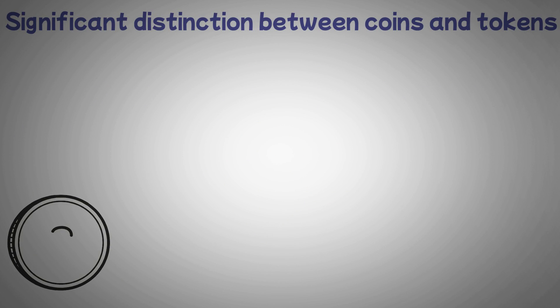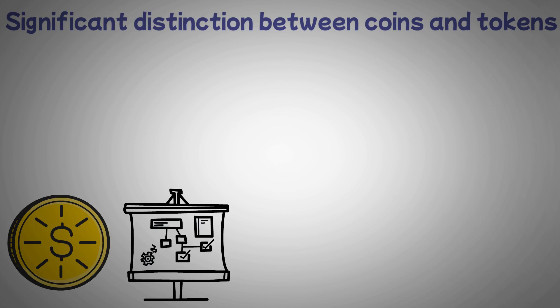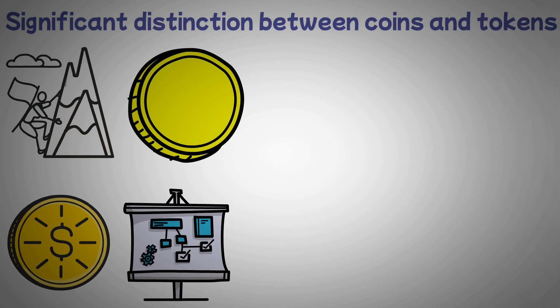Another significant distinction between coins and tokens is that whereas token utility focuses on a particular project, coins typically serve a greater purpose and are more generic in their application. Sounds complicated. I'll give you a couple of instances.